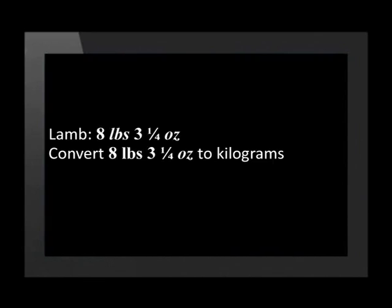You have been given a recipe for lamb stew to cook for your friend's birthday party. The recipe is from England and uses imperial measurements. You have to convert the measurements to the metric system in order to buy the right amount of each ingredient. The recipe asks for eight pounds three and one quarter ounces of lamb. Convert eight pounds three and one quarter ounces to kilograms. One ounce is equal to 0,02835 kilograms.